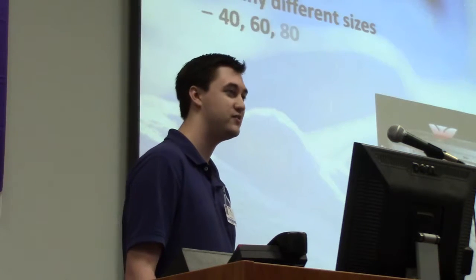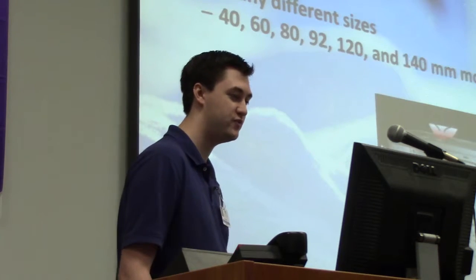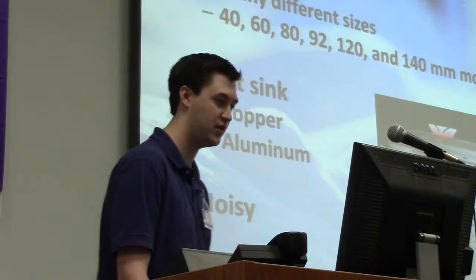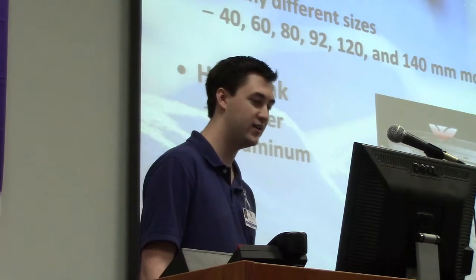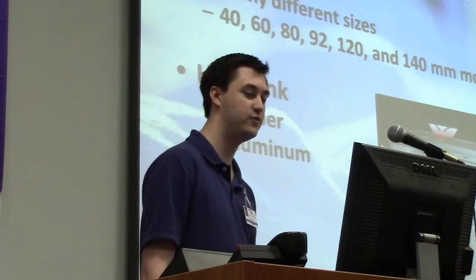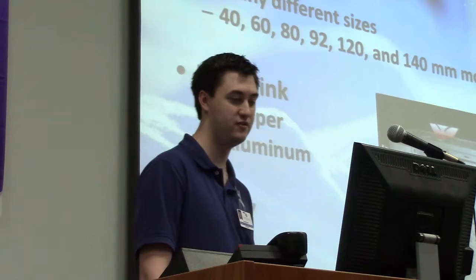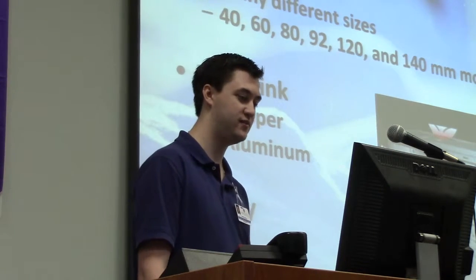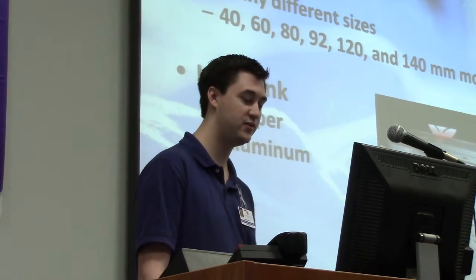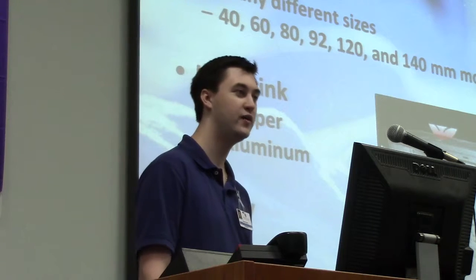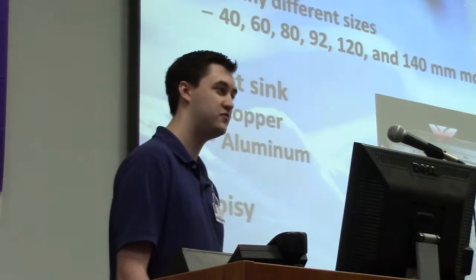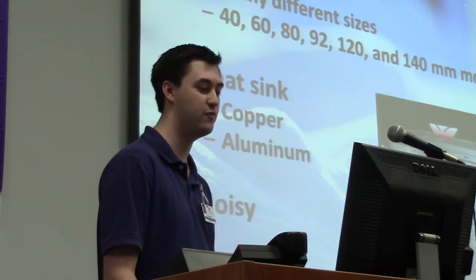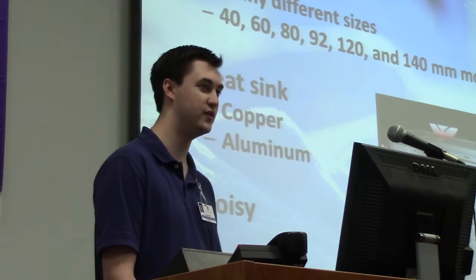After that we've got active air cooling, which uses fans of many different sizes — 40, 60, 80, 92, 120, and 140 millimeter fans most commonly. They're going to have heat sinks that are typically made of copper or aluminum. Copper is going to be your higher performance heat sinks, but it's going to be a little more expensive than aluminum.